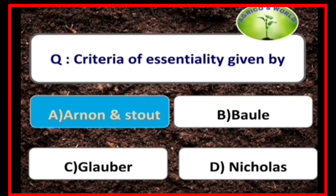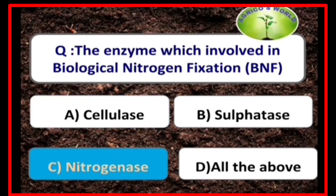Criteria of essentiality was given by Arnon and Stout, and later it was refined by Arnon. The enzyme involved in biological nitrogen fixation is nitrogenase.